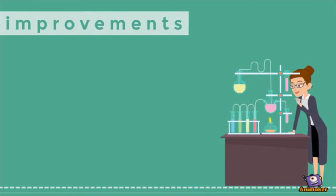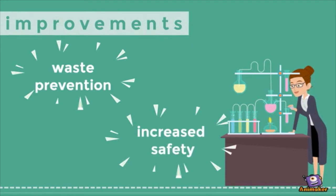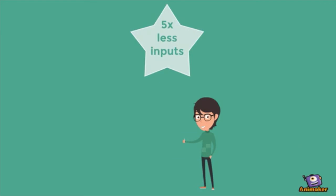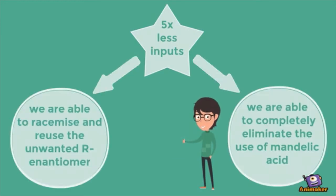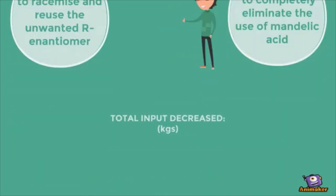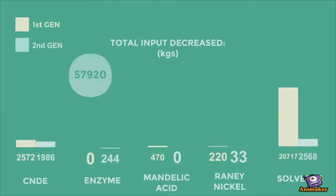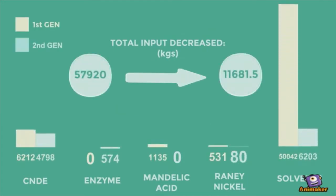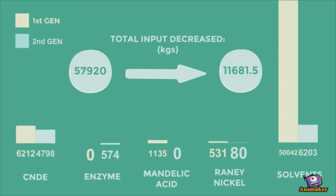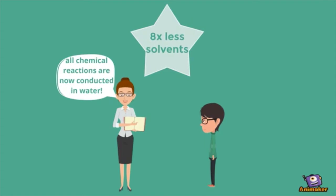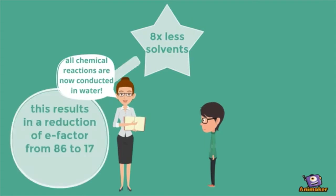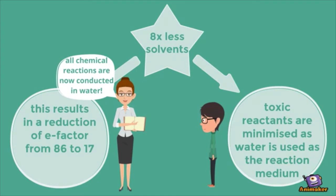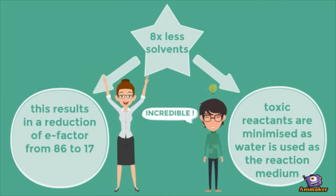Improvements in the second-generation synthesis include waste prevention and increased safety. There are five times fewer inputs because we are able to racemize and reuse the unwanted R enantiomer, and we are able to completely eliminate the use of mandelic acid. The total input decreased from 57,920 to 11,681.5 kilograms. Solvent use was decreased eight times because all chemical reactions are now conducted in water, which reduces the E-factor from 86 to 17 and minimizes the use of toxic reactants.